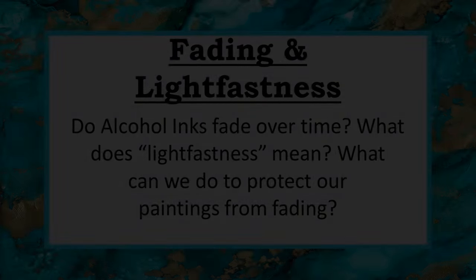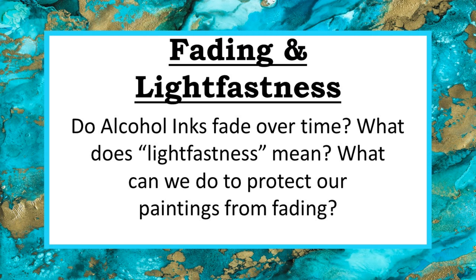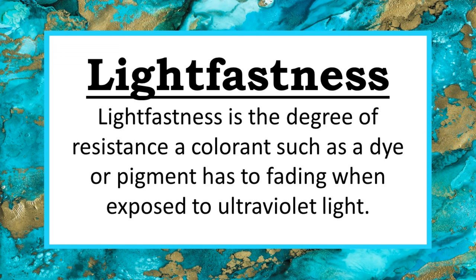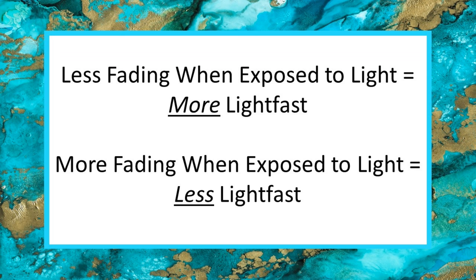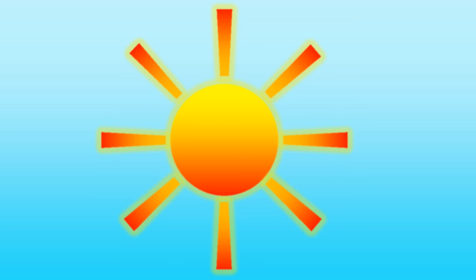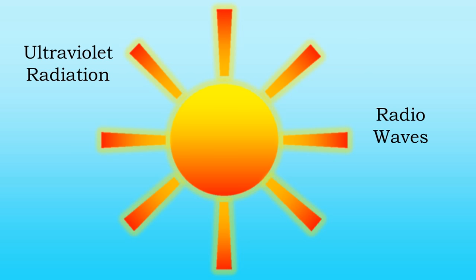So do alcohol inks fade and what is lightfastness? To answer these questions we need to understand light and its relationship to colorants. Lightfastness is the degree of resistance a colorant — such as a dye or pigment — has to fading when exposed to ultraviolet light. In other words, the more lightfast a colorant is, the less it fades when exposed to light. The sun emits ultraviolet radiation, which is a form of electromagnetic radiation.